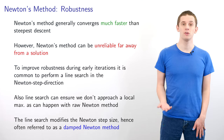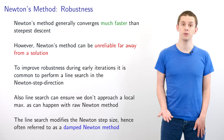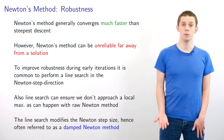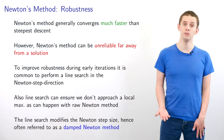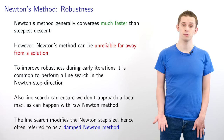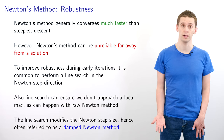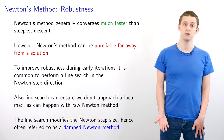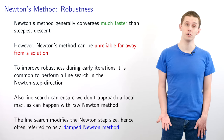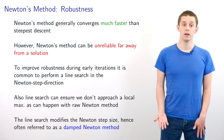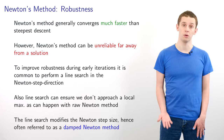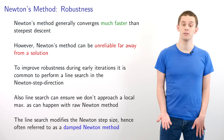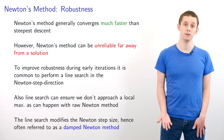As we saw in the example, Newton's method generally converges much faster than steepest descent. However, Newton's method can be unreliable, particularly if we start far away from a solution. In addition, when we take a step from x_k to x_{k+1}, with steepest descent we're guaranteed that our function value will decrease in size, but with Newton's method our function value can actually increase from one step to the next. To improve the robustness during the early iterations, it's common to perform a line search in the Newton step direction. The line search can also ensure that we don't approach a local maximum, and since it modifies the Newton step size, this is often referred to as a damped Newton method.